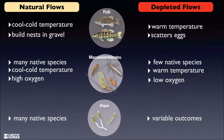Interestingly, a lot of the fish that thrive in modified systems reproduce any time of the year, scattering their eggs throughout the stream — a strategy like that of a dandelion. Algae communities don't always have a consistent response to flow modification, possibly because their life cycles are more tightly synchronized with the chemistry of the water than with the quantity of flow.